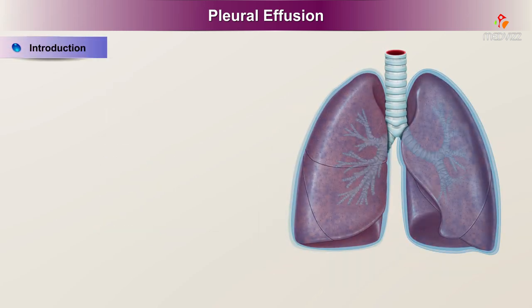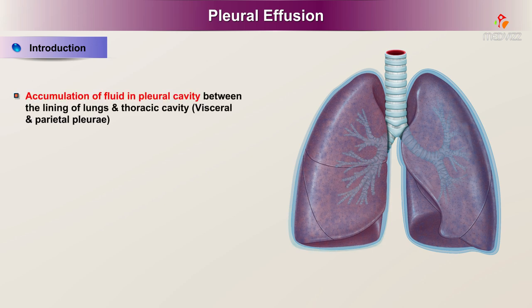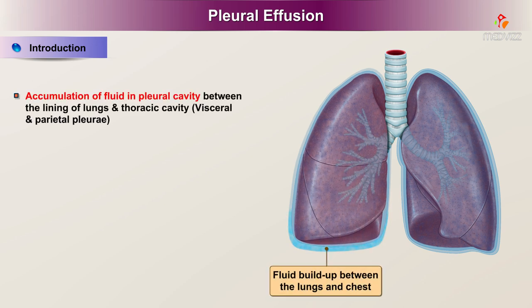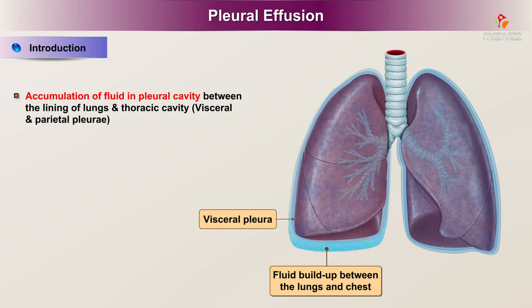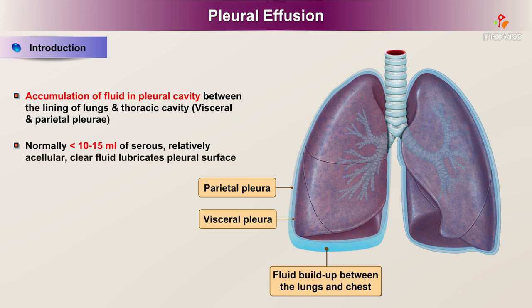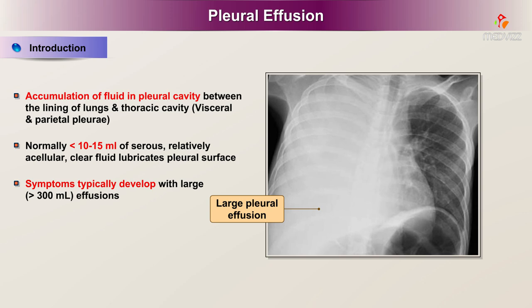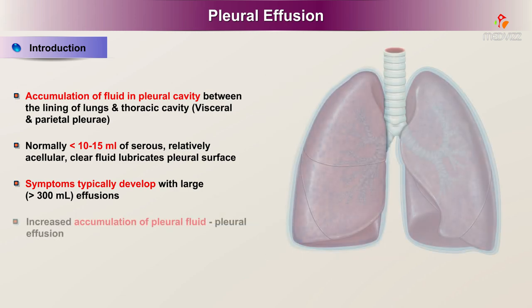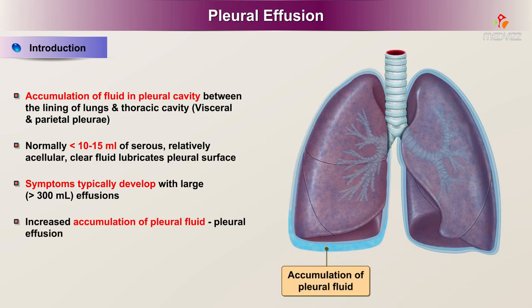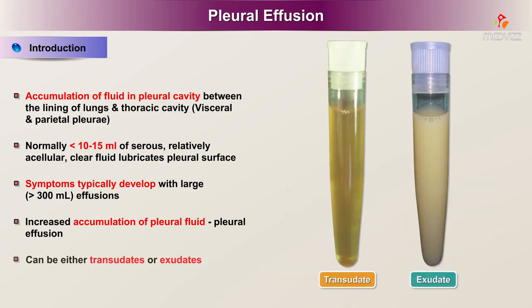Pleural effusion is an accumulation of fluid in the pleural cavity between the lining of the lungs and the thoracic cavity, that is the visceral and parietal pleurae. Normally, no more than 10 to 15 ml of serous, relatively acellular, clear fluid lubricates the pleural surface. Symptoms typically only develop with large (more than 300 ml) effusions. Increased accumulation of pleural fluid is called pleural effusion, and it can be either transudates or exudates.